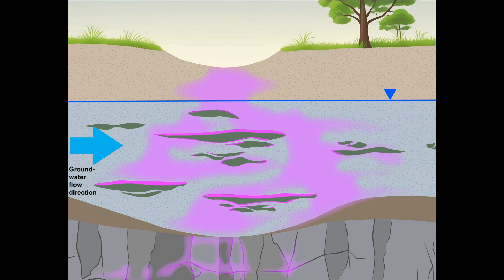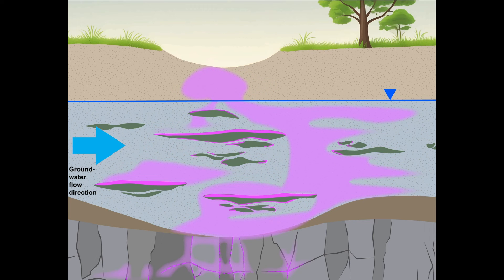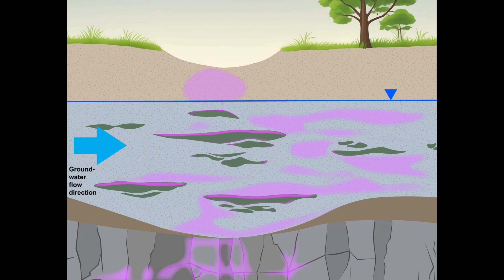The dissipation process is very slow and may take centuries. After a long time, all of the D-NAPL is purged from the system.